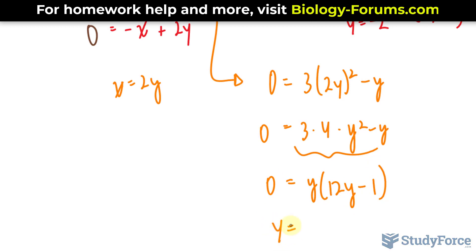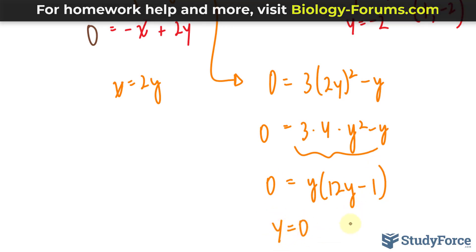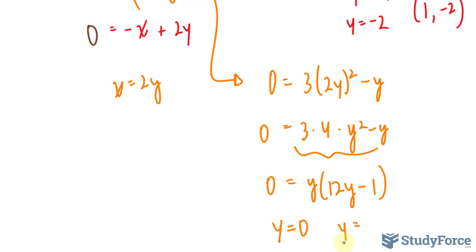Therefore, we have a solution at y is equal to 0, and a solution where y is equal to 1 over 12. We can take these values, substitute them into here, where we have an x value. If we substitute 0 into here, we get x is equal to 0. So we have one critical point at 0 and 0. And substituting 1 over 12 into here, we end up with 2 over 12, which is 1 over 6. So a solution at 1 over 6 and 1 over 12.